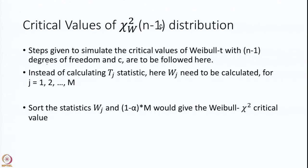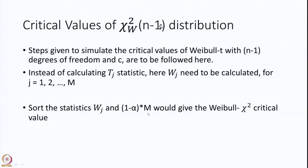To find the critical values of the Weibull chi-square distribution with n minus 1 degrees of freedom and nuisance parameter C, you take the same simulation steps. Instead of calculating test statistic T_j, you calculate W_j. Sort W_j from smallest to largest and take the (1 minus alpha) times M-th value, which will give you the Weibull chi-square critical value. Here the given value is sigma 0 square, so there will be a slight change: you take sigma 0 square, find c 0 from that using the relevant formula, and then do the simulation.